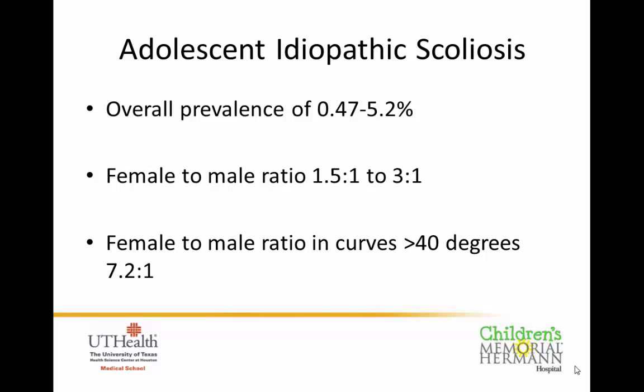The overall prevalence of adolescent idiopathic scoliosis is 0.5 to 5% of the population. There is a significant female predominance with a female to male ratio of 1.5 to 3 to 1. Females tend to have the more severe curves — in curves greater than 40 degrees, the ratio is as high as 7.2 to 1. So the majority of patients we treat for AIS are female.